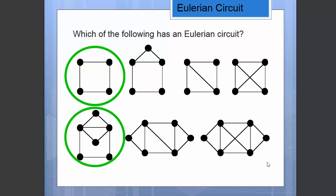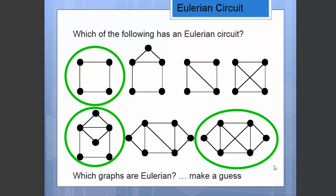You'll see that this one and this one do and the other four do not. We've solved this previously, but if you look at this example and make an educated guess, you might notice that all the graphs circled in green have every single vertex with even degree, and the ones that don't have an Eulerian circuit have at least some vertex with odd degree. Your guess would be absolutely correct.